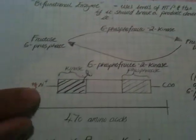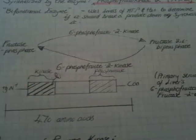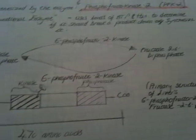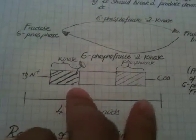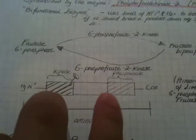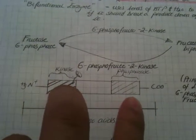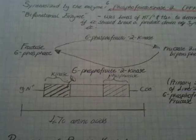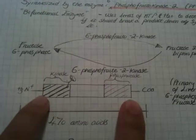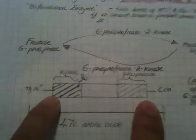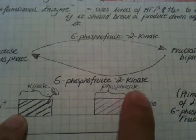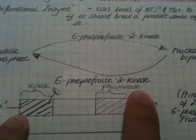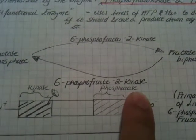This is just a linear primary structure form of this molecule. The reason why it's called bifunctional is because it has two actual functional parts. On the N-terminal it has a kinase part. On the C-terminal it has a phosphatase part. Whenever you see 'phosphatase,' it means it takes a phosphate away from something.